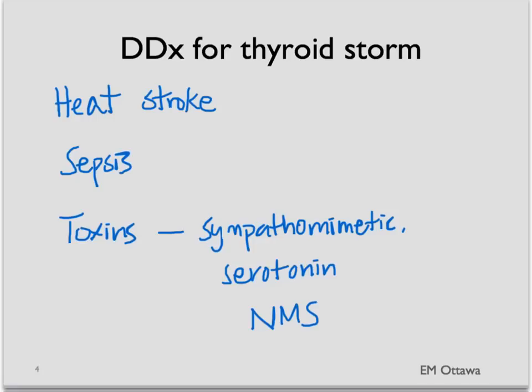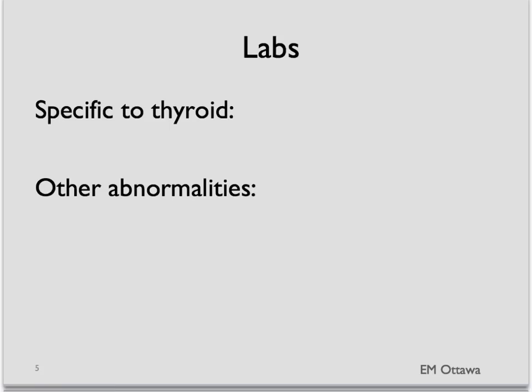If the history does not help you, sometimes laboratory studies might help sort this out. What labs would be helpful? Specific to the thyroid, if this is a thyroid storm or at least a hyperthyroid state, you would expect a high T3, high T4, and a low TSH.